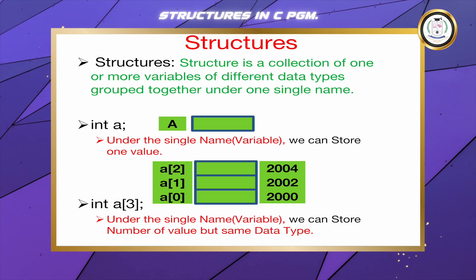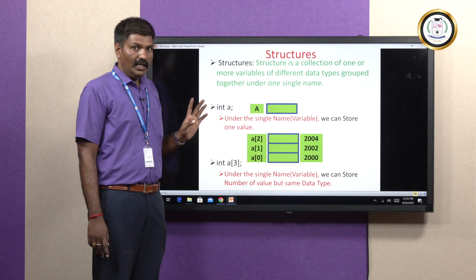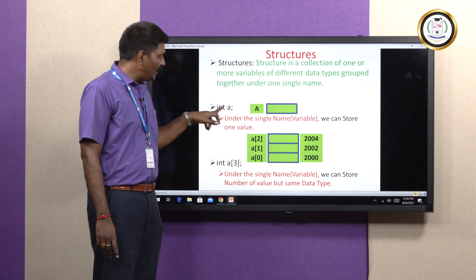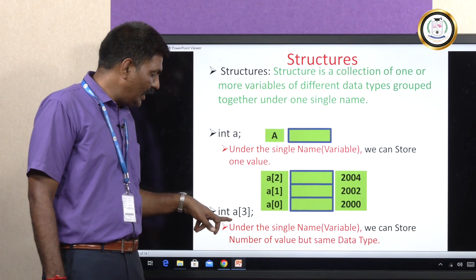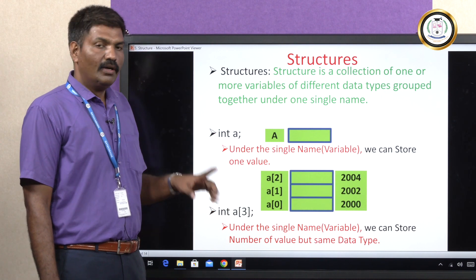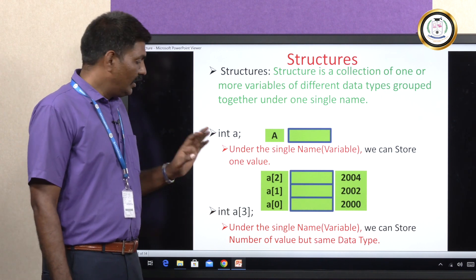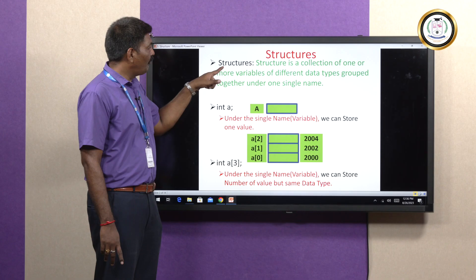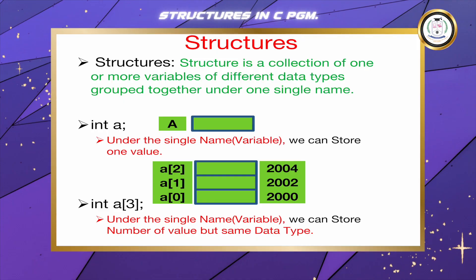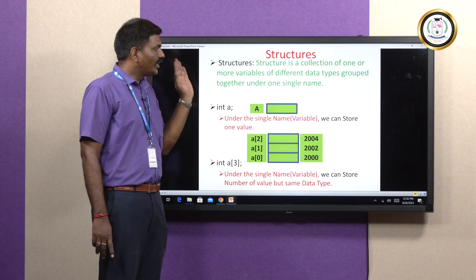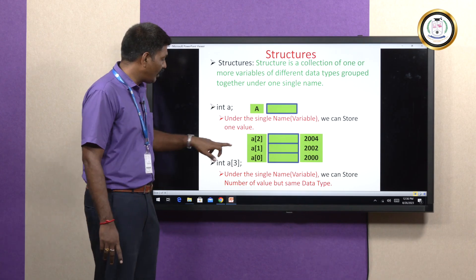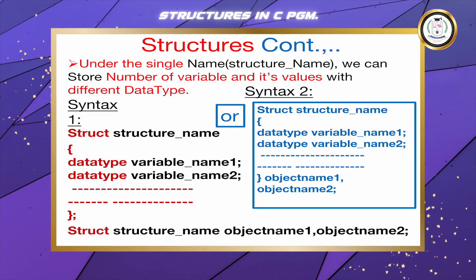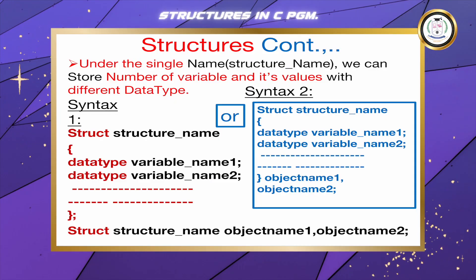An array can store n number of values under a single data type. Based on integer, we can store only one value; based on an array, you can store n number of values, but under the same single data type. That is why we go for structure — a structure is a collection of one or more variables of different data types, meaning you can store n number of values belonging to different data types.